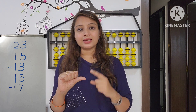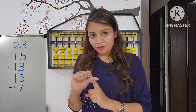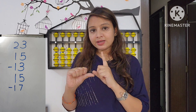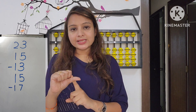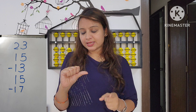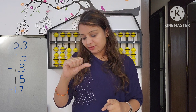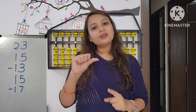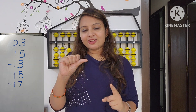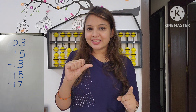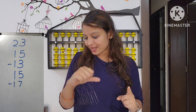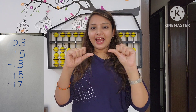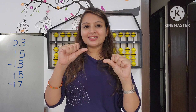For less 17: we do less 10 first — that is happening simple. Then less 7: less 10, add 3 — big friend formula. The answer is 23.